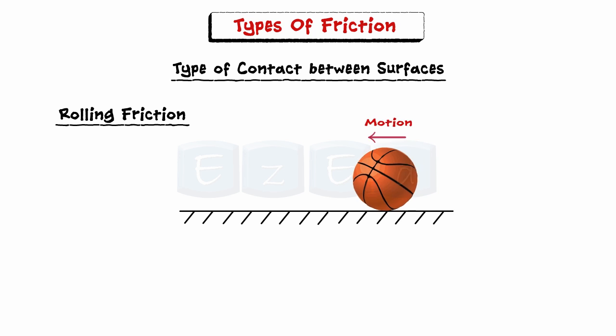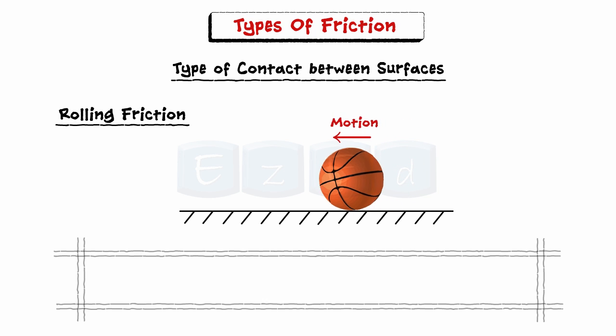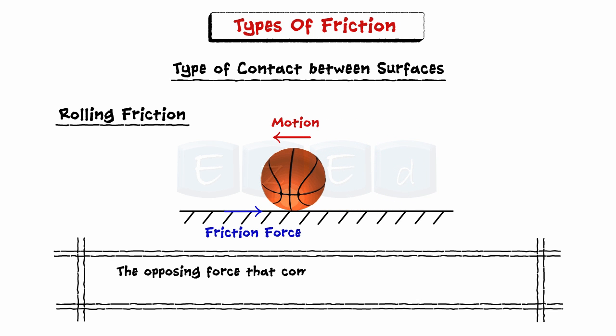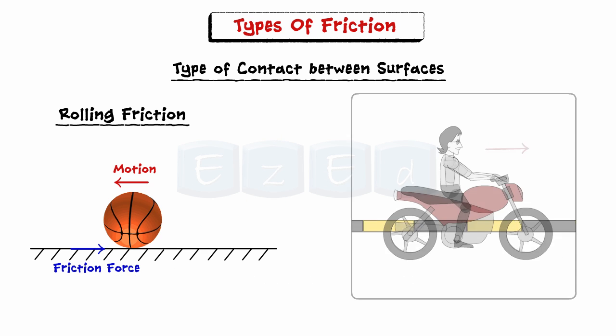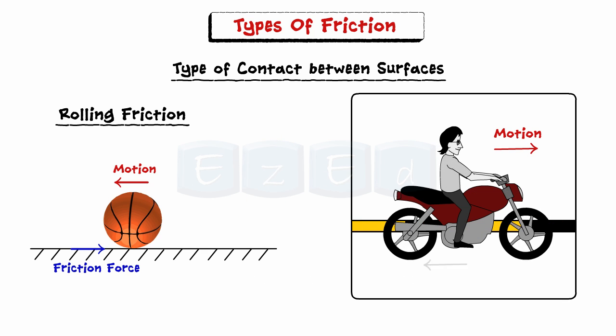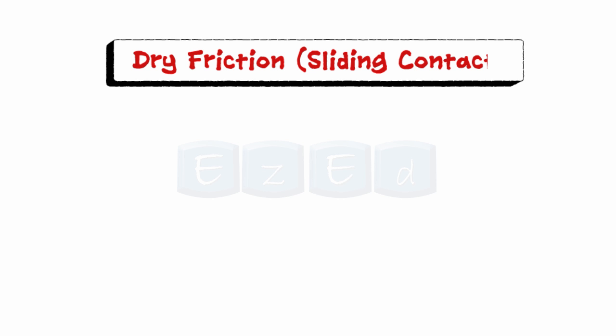Rolling friction is defined as the opposing force that comes into play when one body is actually rolling over the surface of another body — that is, something with wheels or that is circular like a ball. For example, when riding a motorcycle, rolling friction is observed. In our course, we will only be dealing with the effects of dry friction with sliding contact.